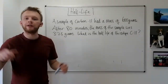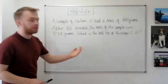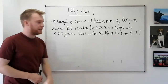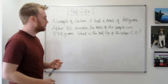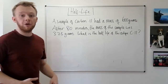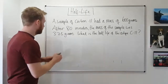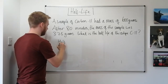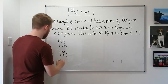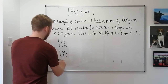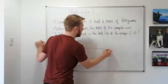Here's a slightly trickier one, but if we follow the same process we'll get to the answer. It says: a sample of carbon-11, an isotope of carbon, has a mass of 600 grams. After 80 minutes, the mass has fallen to 37.5 grams. What is the half-life of carbon-11? We need to work out the half-life — how long it takes for half of the mass to decay. Let's set out the table again with columns for number of half-lives, time in minutes, and mass in grams.